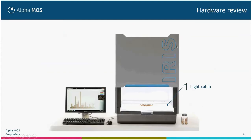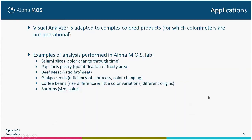This is the ARIS Visual Analyzer. We have a light cabin in which we can put a sample. The camera is inside, which takes pictures that can be treated using the computer with the AlphaSoft software. The Visual Analyzer is adapted to complex colored products for which color meters are not operational. We will not analyze one unique color, but the composition — a mixture of different colors in a product.